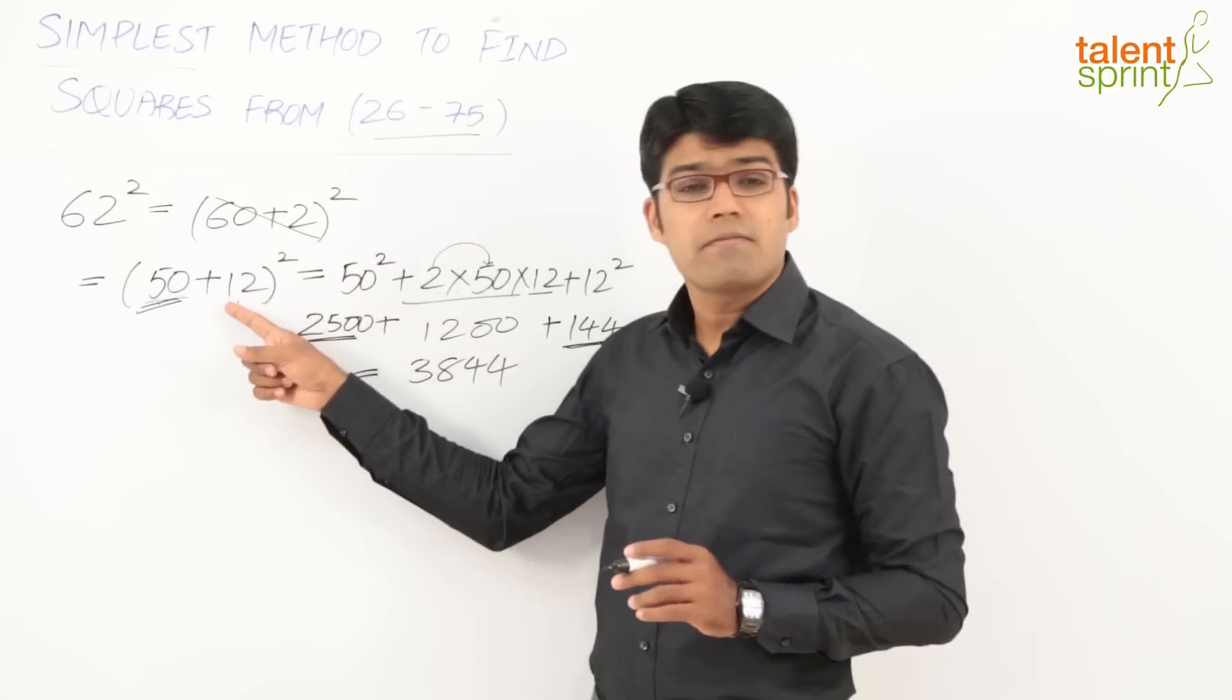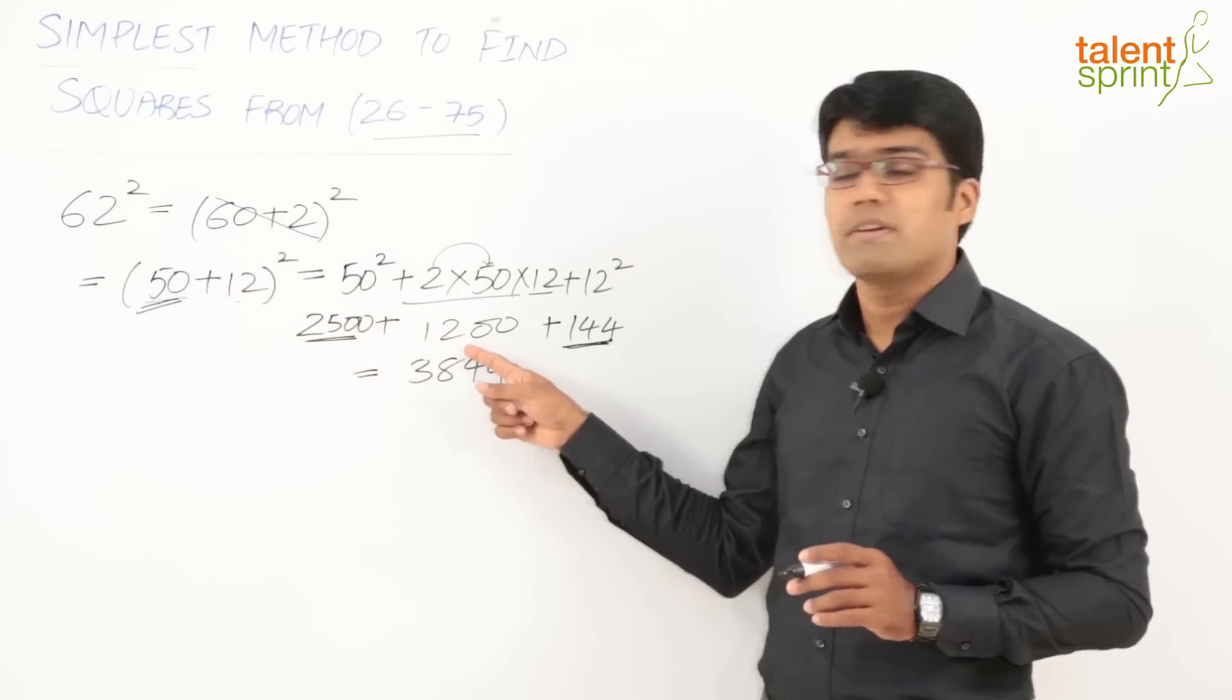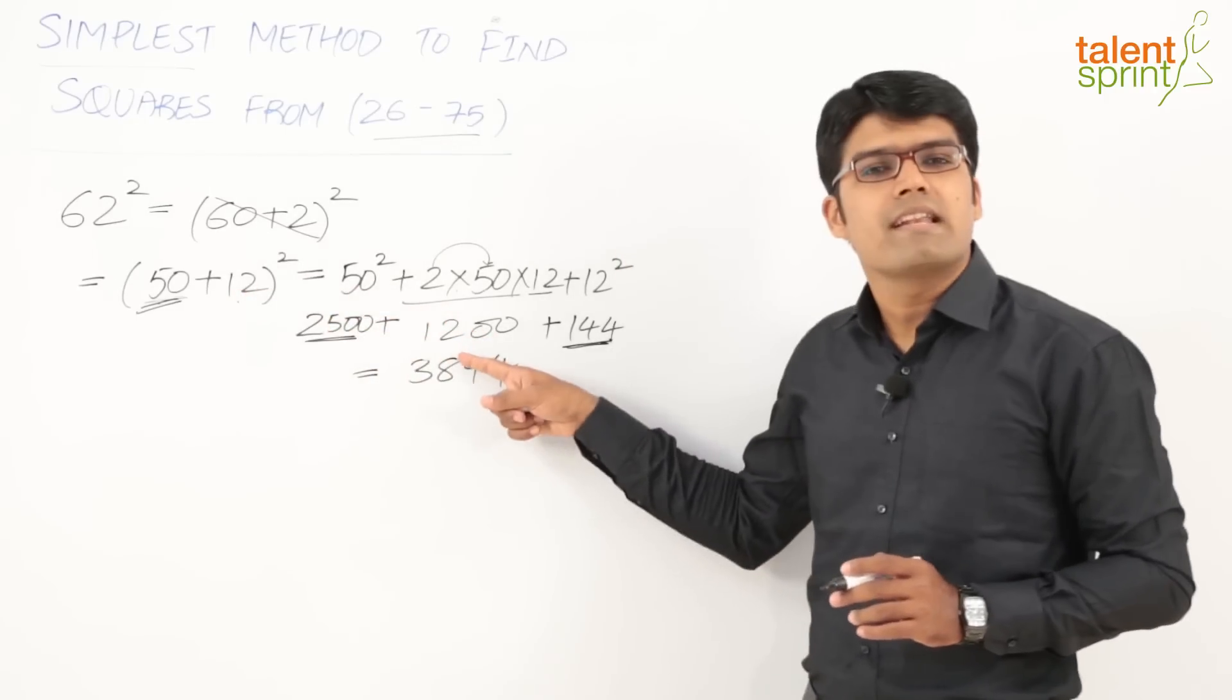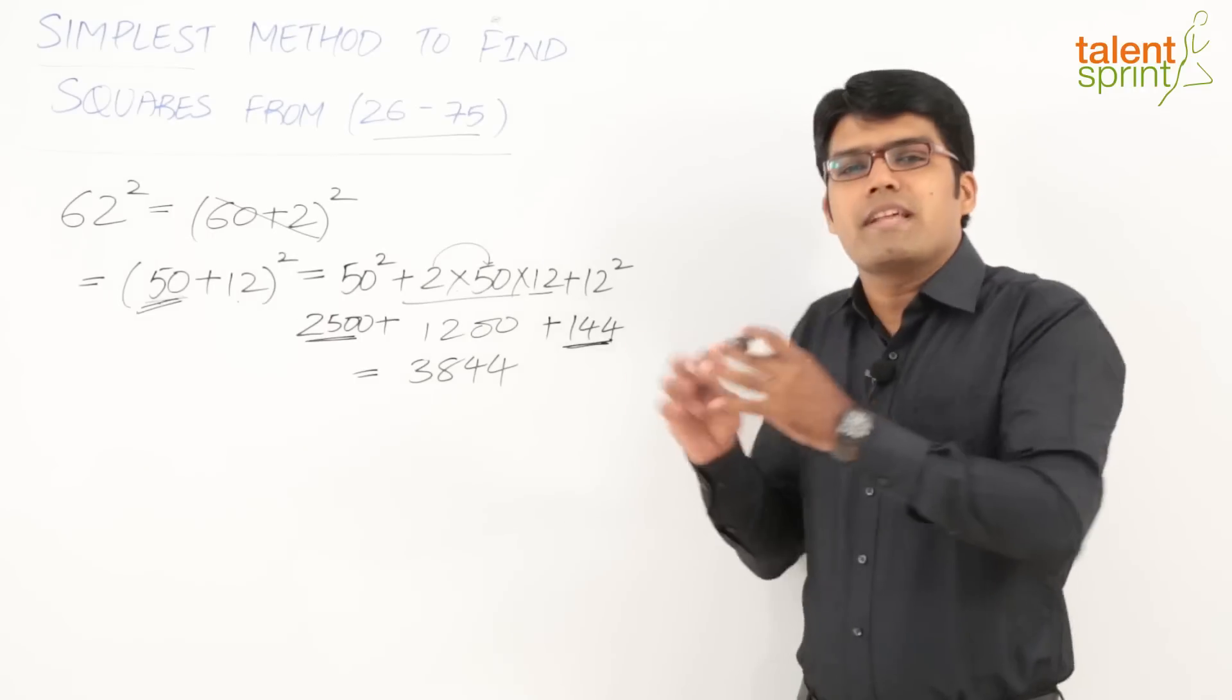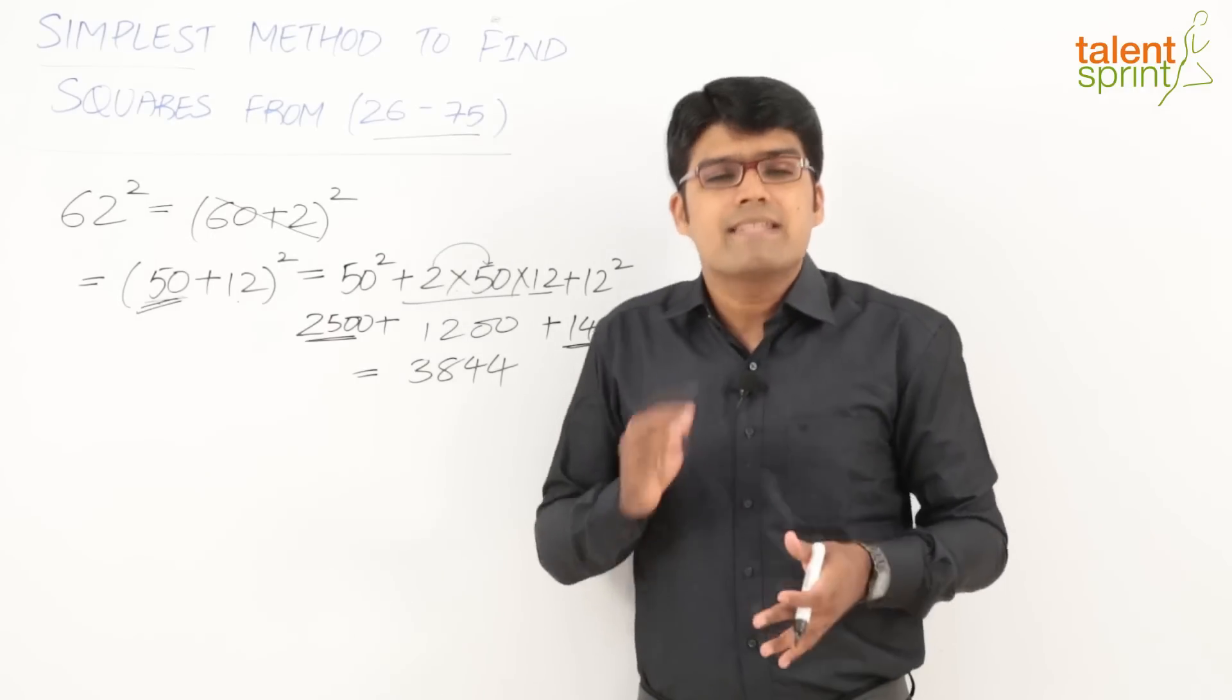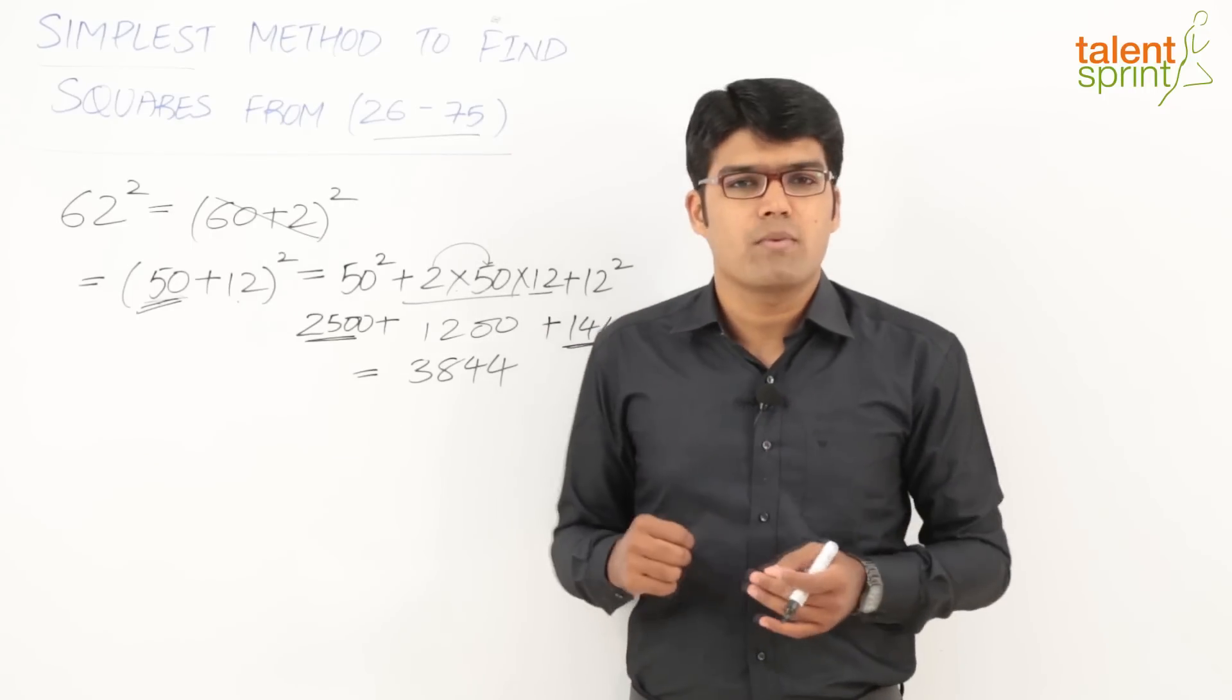Let us say if we have 50 + 13, then this will be 1300. If it is 50 + 17, then this would be 1700. If it is 50 + 22, then this is directly going to be 2200. So without putting anything on paper or without using the actual expansion, we can simply say that the answer here will be in terms of 2500 + b × 100 + b².